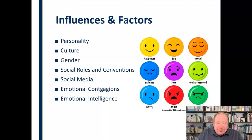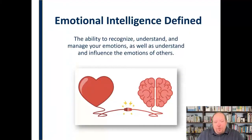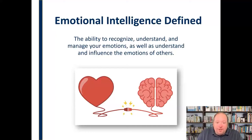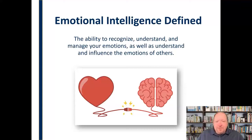We need to be aware that our emotions can rub off on others, so what kind of emotion do we want to share with the world? Finally, we can look at emotional intelligence. Emotional intelligence is the ability to recognize, understand, and manage your own emotions, as well as understand and influence the emotions of others. Recognizing, understanding, and managing your own emotions is a real challenge — some people do this more easily, but all of us have some ability to develop this skill.